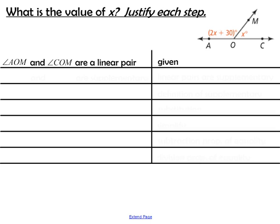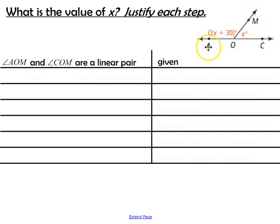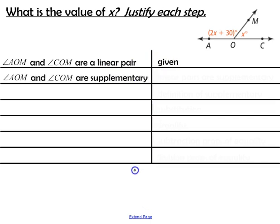Now let's try that with a geometry problem. You're given a diagram where the measure of angle AOM is 2x plus 30 and the measure of angle MOC is x. From the diagram, angle AOM and angle COM are a linear pair — that's given. Because they are a linear pair, angle AOM and angle COM are supplementary, since linear pairs are supplementary.